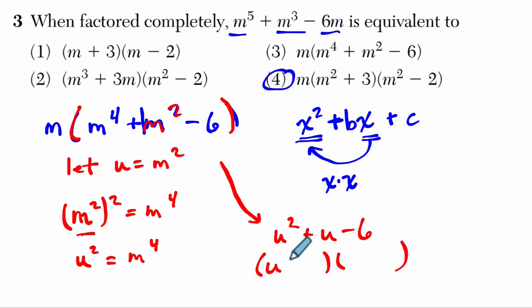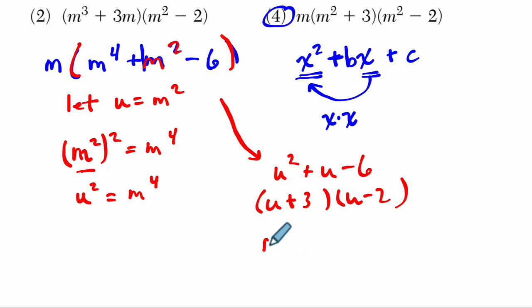And this is a little bit easier to see why we can factor this as a quadratic. It's just u plus 3 and u minus 2. And then if we substitute back in, u is m squared. What would we get? We would get m squared plus 3, and m squared minus 2, which is what we got before. Just don't forget there was an m in the front.